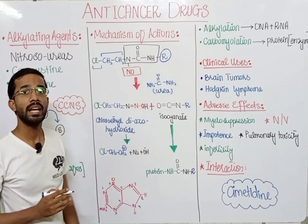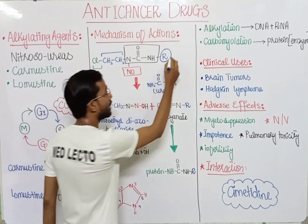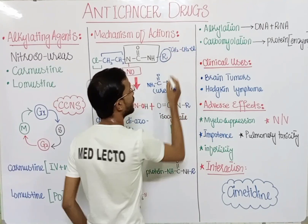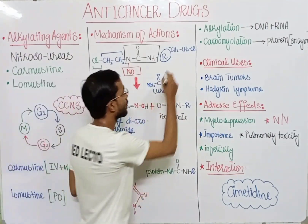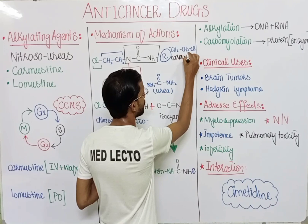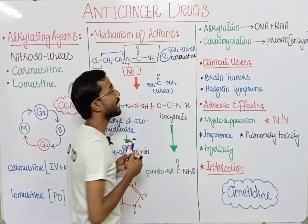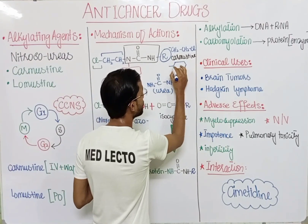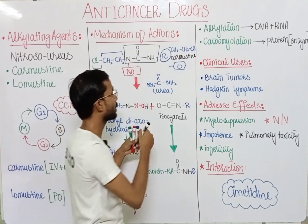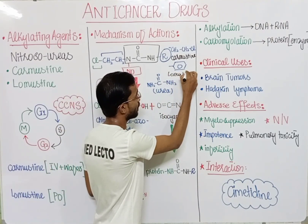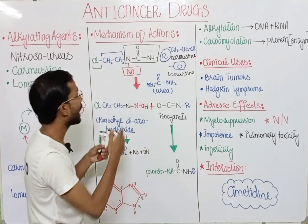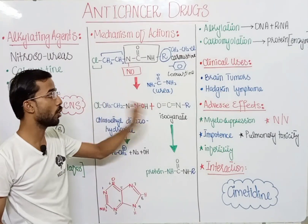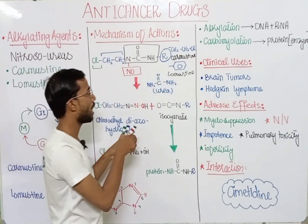For carmustine, the R group change will be CH2, CH2, and Cl. For lomustine, this group will change to a benzene ring. The other structure after the R group will be similar in both carmustine and lomustine, but the change will be at the R group.